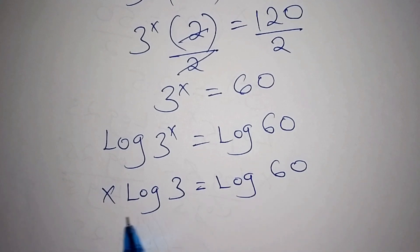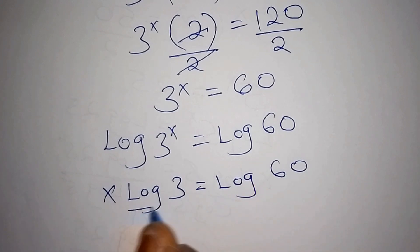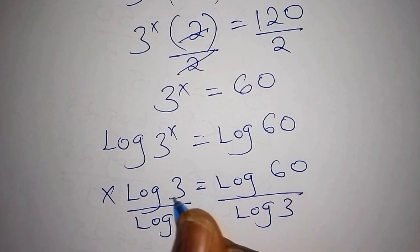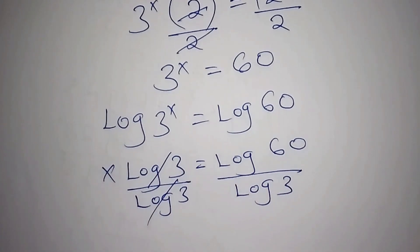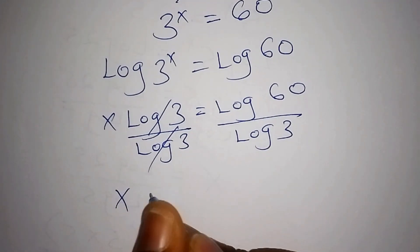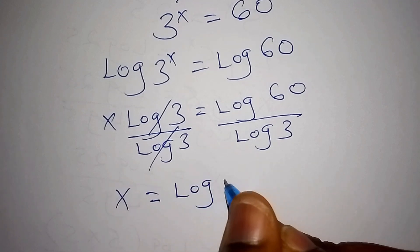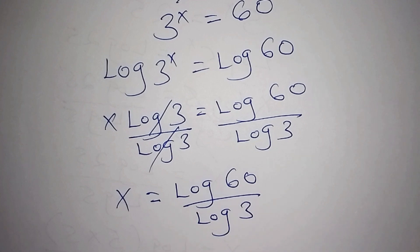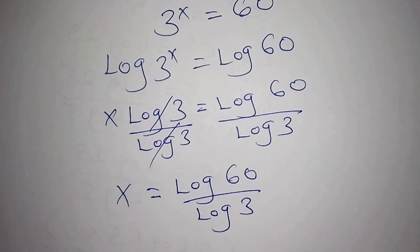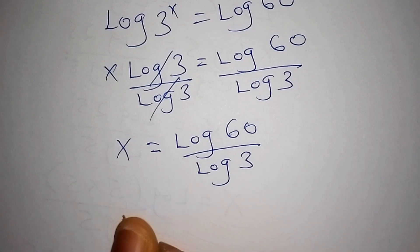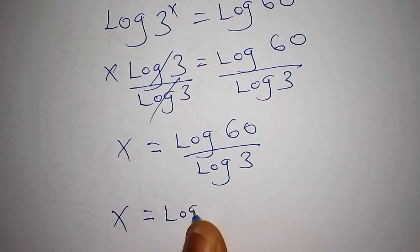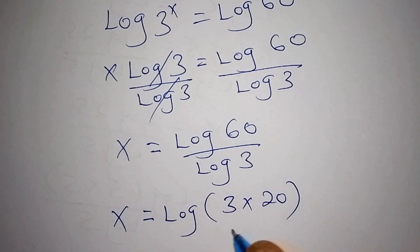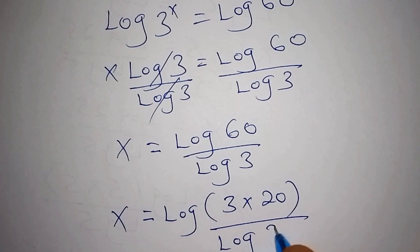We want to isolate x, so we divide both sides by log 3. The log 3 terms cancel, giving us x equals log 60 over log 3. We can also express log 60 by writing 60 as 3 multiplied by 20, so x equals log(3 times 20) all over log 3.